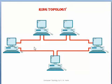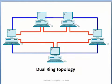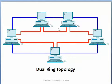In ring topology, data flows in one direction. One important drawback is that if any intermediate cable fails, the entire network will collapse. To address this drawback, dual ring topology is used. In dual ring topology, every computer is connected to another with two cables — one for transmitting and one for receiving. If one cable fails, the other link is used for transmitting or receiving information.